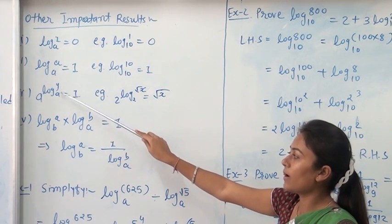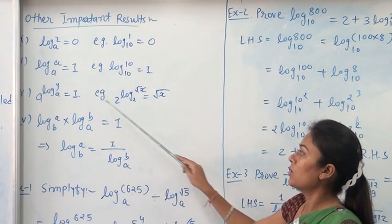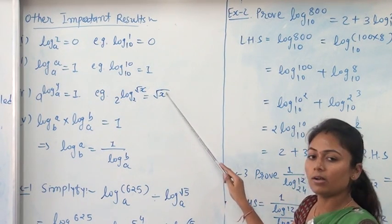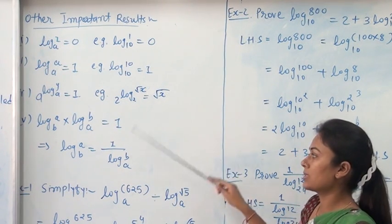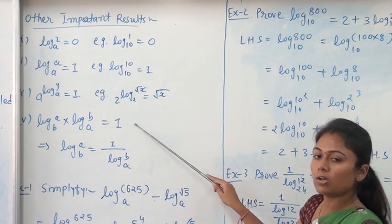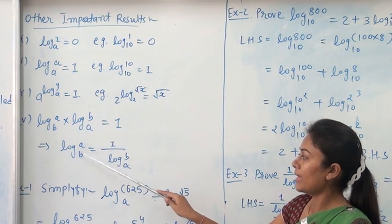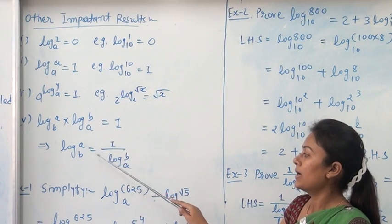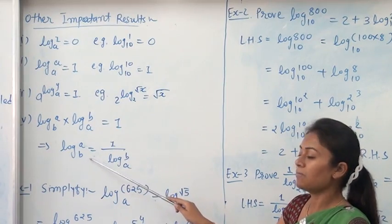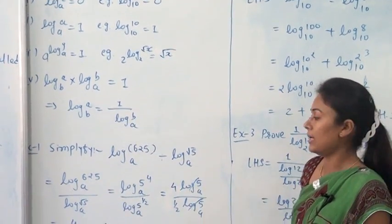Third result: A raised to log y base A equals y. For example, 2 raised to log root x base 2 equals root x. Fourth: log A base B into log B base A always equals 1. Therefore, log A base B equals 1 upon log B base A — that is, log A base B is the reciprocal of log B base A.